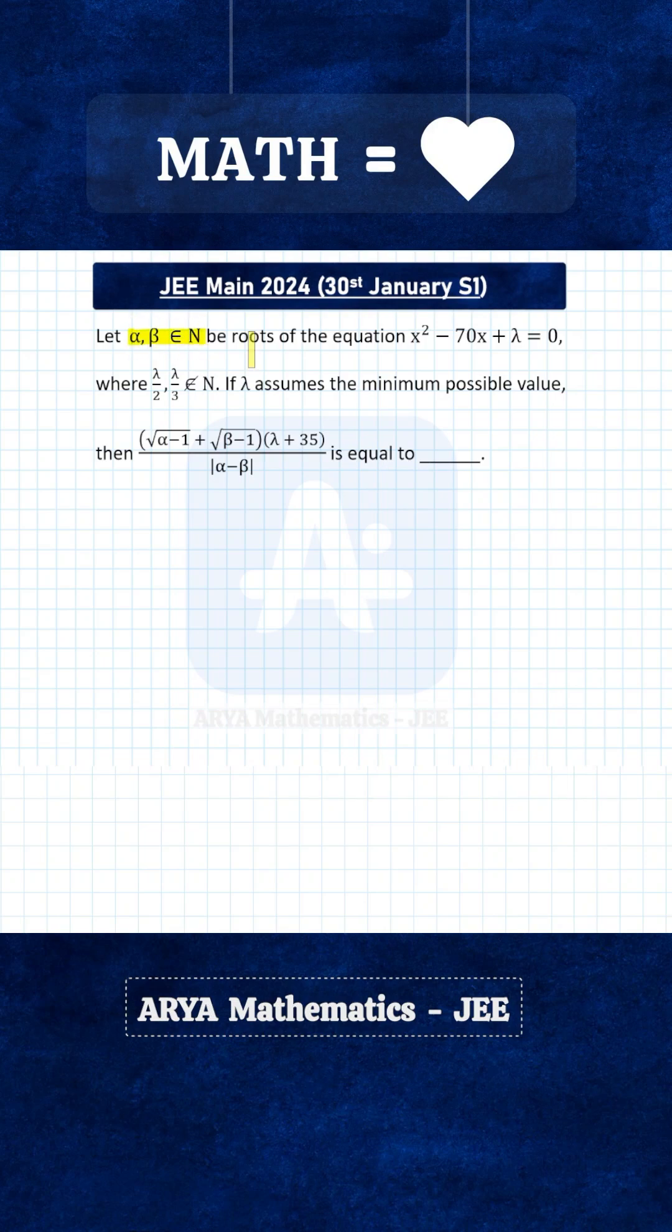Alpha and beta are natural numbers satisfying this quadratic equation in x: x squared minus 70x plus lambda equals 0. It is given that lambda by 2 or lambda by 3 is not a natural number, that means lambda is neither a multiple of 2 nor a multiple of 3. If lambda takes the minimum possible value, then we have to find the value of this expression.